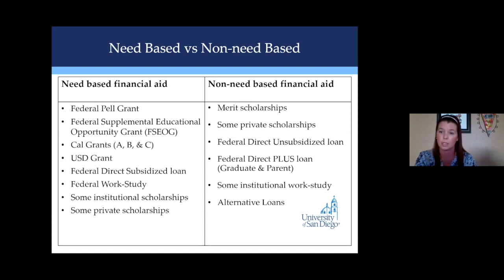For this current academic year, our cost of attendance for an undergraduate student living on campus is about $72,000 for the year. With a zero EFC, your federal need would be the full $72,000, and USD would meet 100% of that need with grant aid, work study, and the subsidized loan.